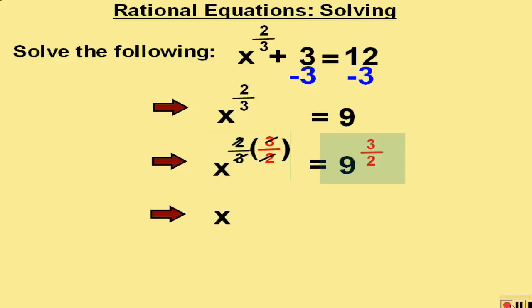And 9 to the 3/2 power is equivalent to the square root of 9 to the 3rd. We first take the square root of 9, which is 3, and then cube it. And the answer becomes 27.